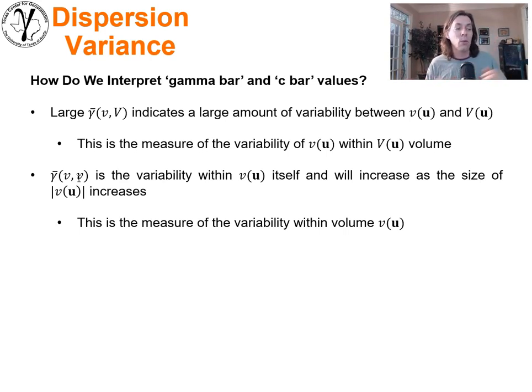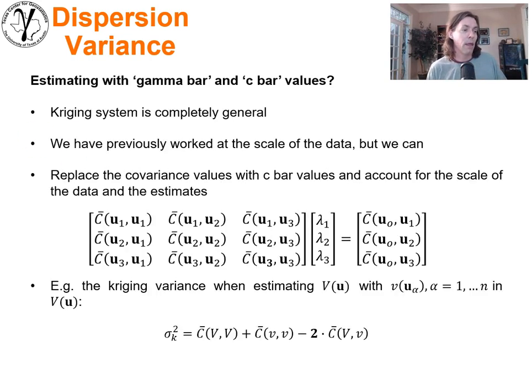If you do that, it's now a measure of the degree of variability within that volume. If you increase the size of that volume, you would expect the gamma bar little v little v to actually increase—there's more variability within the volume. So it's really a measure of variability within a volume, not just between volumes.